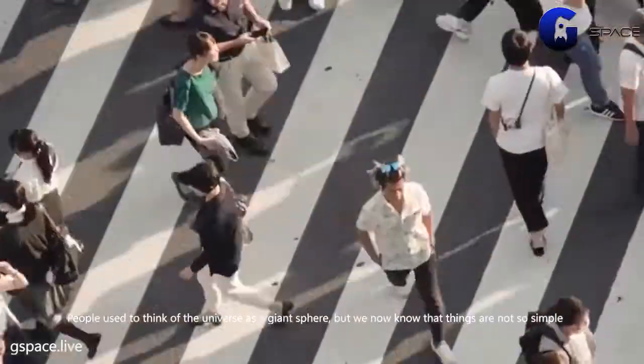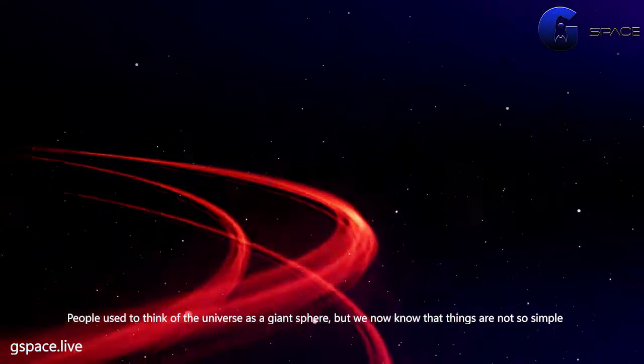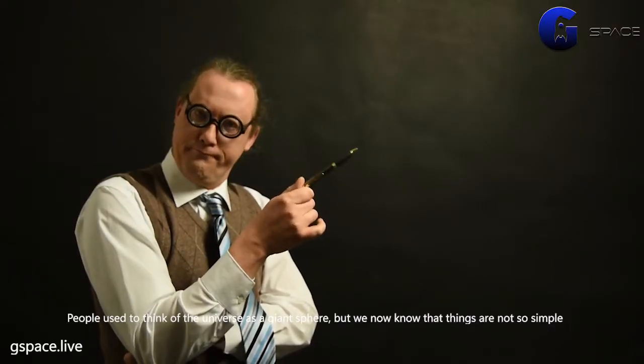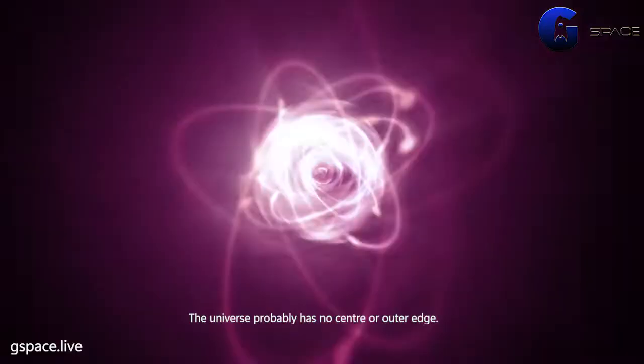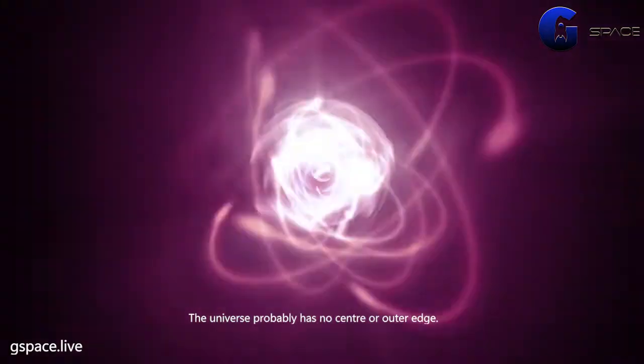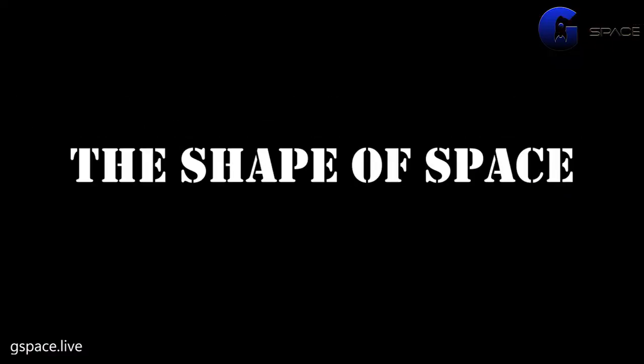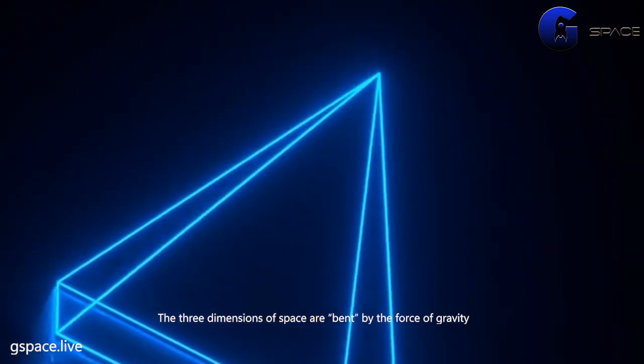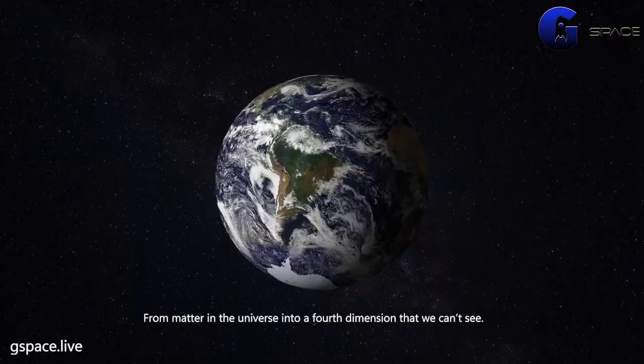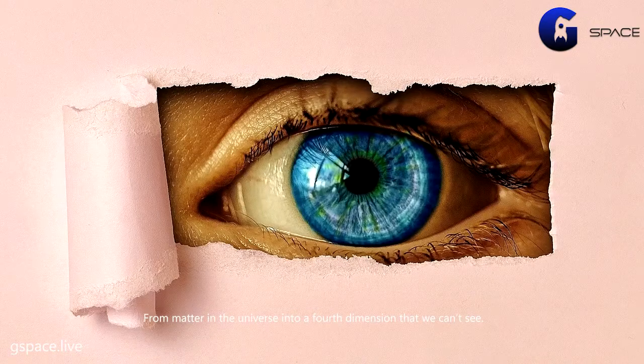People used to think of the universe as a giant sphere, but we now know that things are not so simple. The universe probably has no center or outer edge. The shape of space - the three dimensions of space are bent by the force of gravity from matter in the universe into a fourth dimension that we can't see.